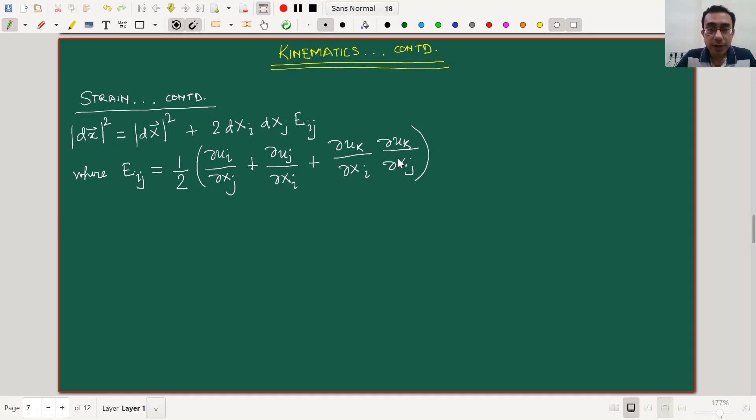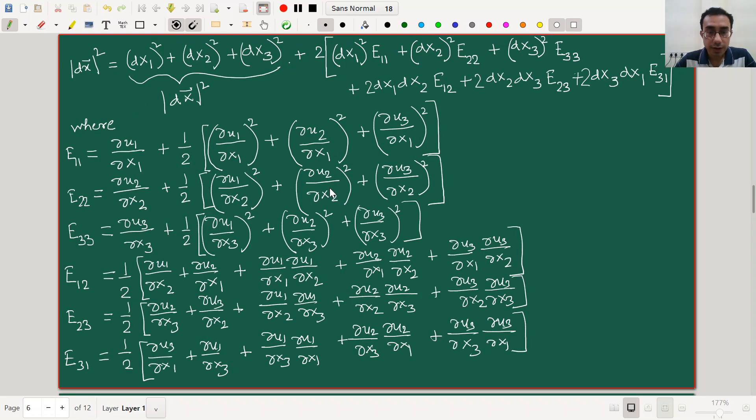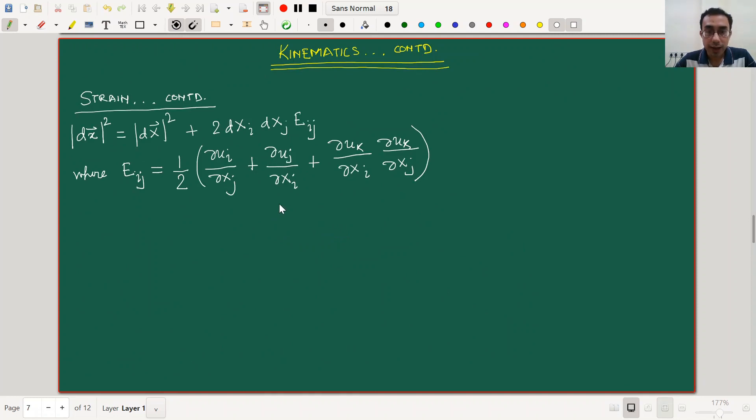Now, if you are not very familiar with the index notation, it might seem like almost like black magic to you what I have just done. But if you have practiced a little bit with index notation, you will see that whatever we have written down in the previous slide with these large expressions, they are exactly replicated through different choices of i and j here. And you can actually test it out yourself by simply substituting, for example, i equal to 1, j equal to 1 here, in which case you should be able to get back the expression for e11 that we had written earlier.